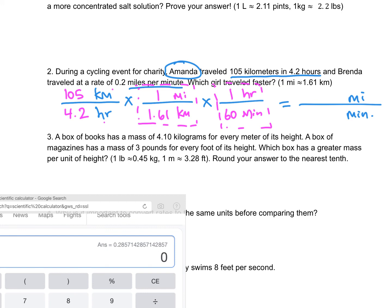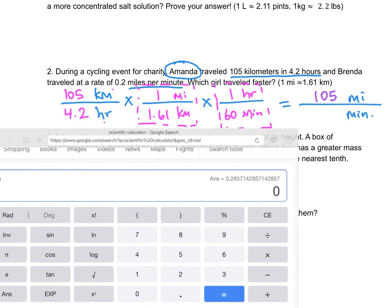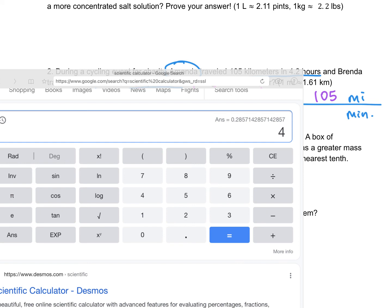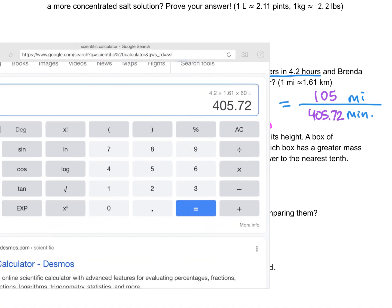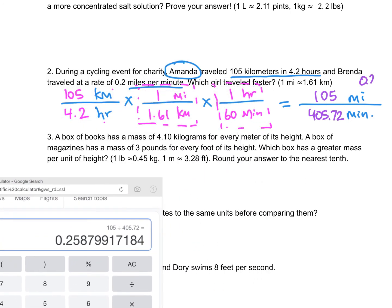Next up, we need to do some calculations, multiplying on the top by all of those three values. 105 times 1 times 1 is simply 105. And in the denominator, we need to do the same thing, taking 4.2 times the 1.61 times the 60. So 4.2 times the 1.61 times 60. That gives us a total of 405.72. And we can't quit there, because we want to compare it with Brenda's rate, which was in miles per a single minute. So let's go back to the calculator, and let's take the 105 divided by the 405.72. So if we round to the nearest hundredth, that would be 0.26. And that's miles per minute for Amanda.